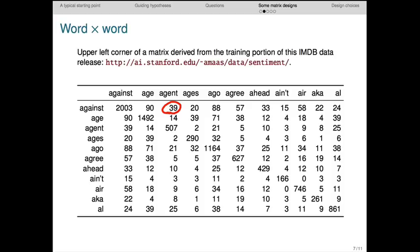Now, IMDB reviews are pretty long, and we have a very permissive notion of context, so this matrix is especially dense. There are almost no zeros, which is a real contrast from the word by document matrix we just looked at, which comes from the same underlying corpus.